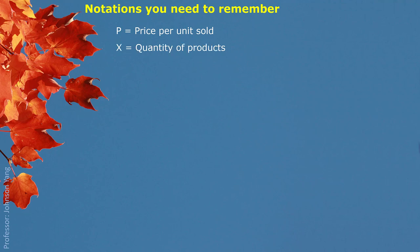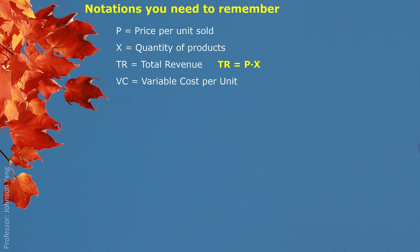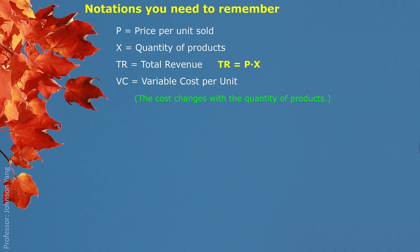Here are some notations and symbols we use. We use P to represent price per unit sold, X to represent the quantity of products, and TR to represent total revenue, so TR equals price multiplied by quantity. VC is used as variable cost per unit, and TVC is the total variable cost, so TVC comes from variable cost per unit multiplied by the quantity of products.